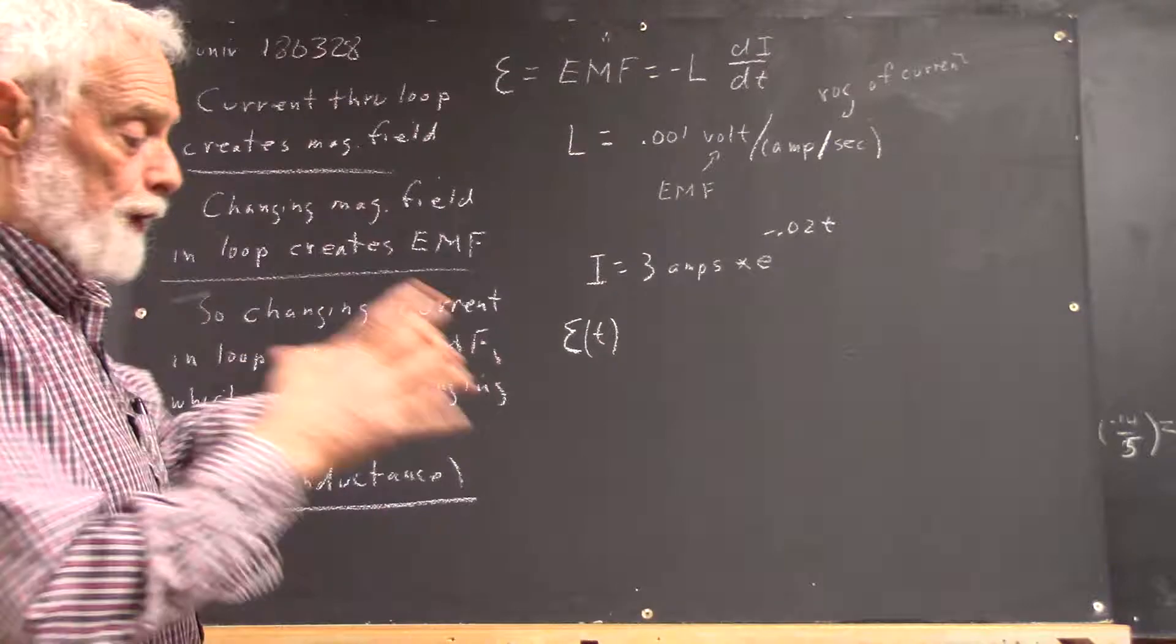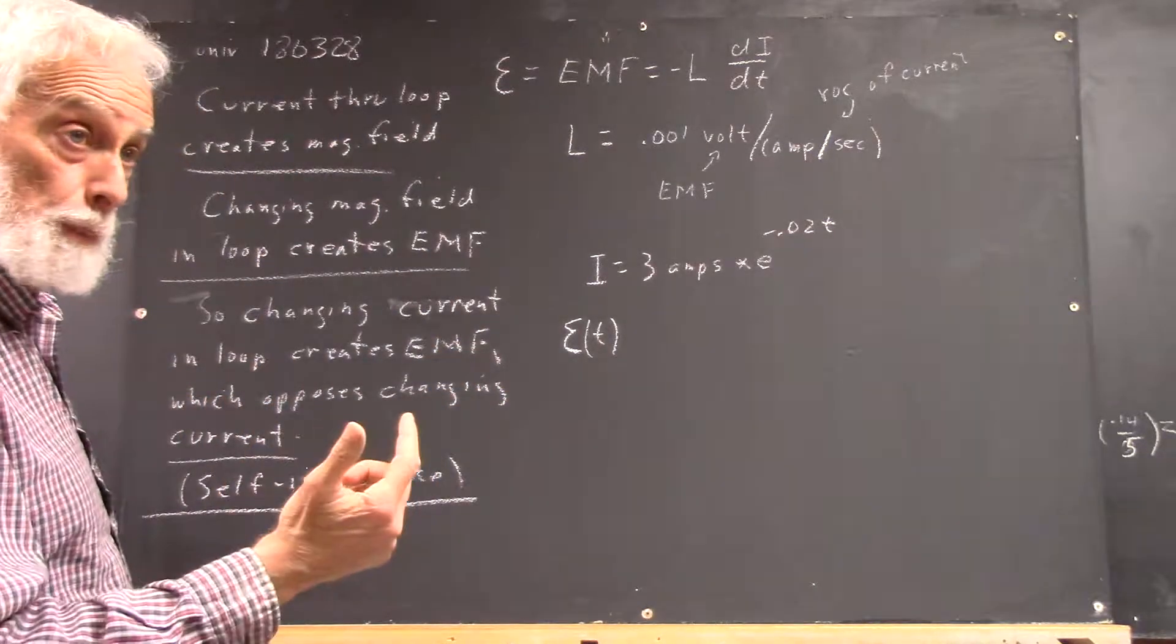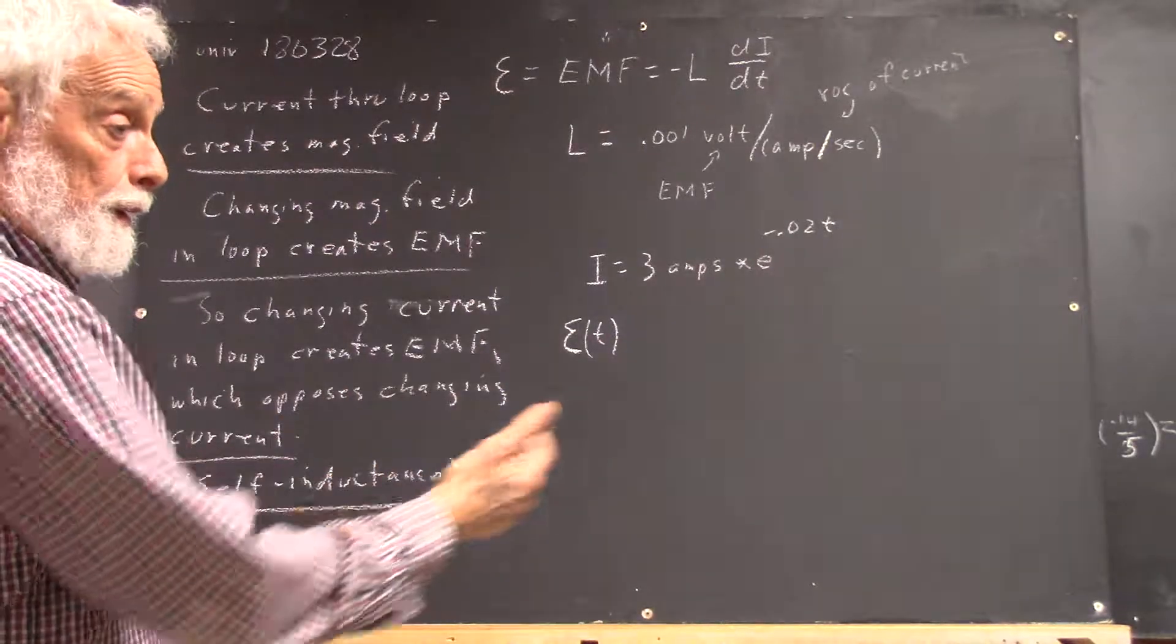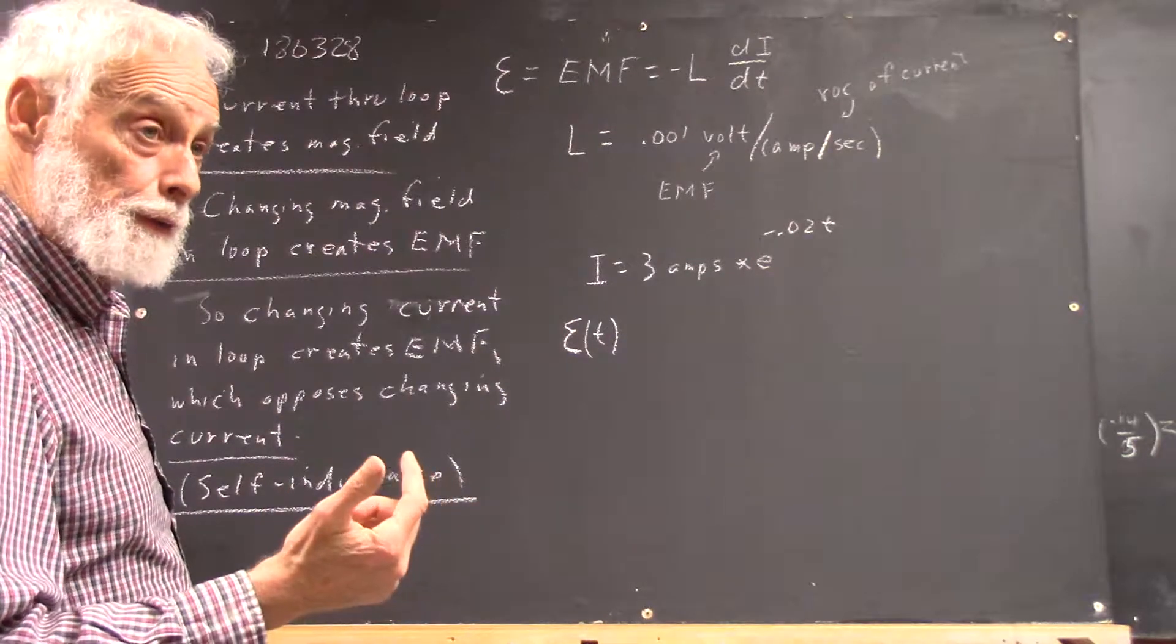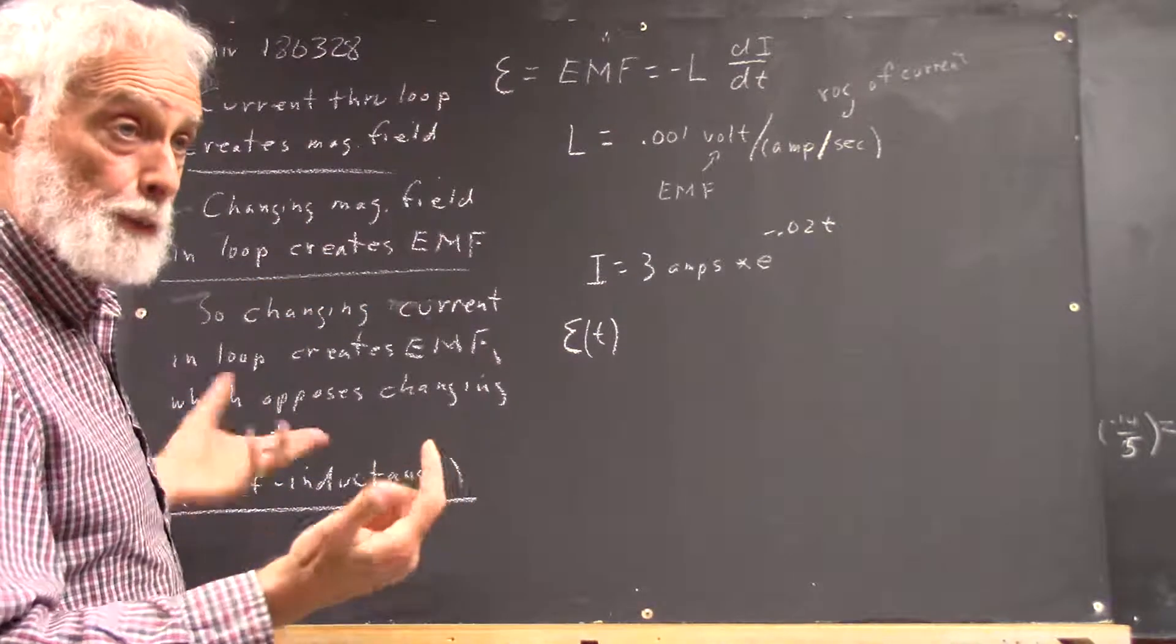So if this is a loop and you change the magnetic field, there's an EMF around this loop. From this point to this point, there's a potential difference. And if it's a conducting loop, it'll create a current, and that's what we observed.